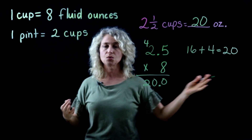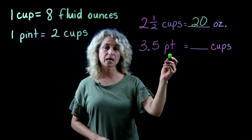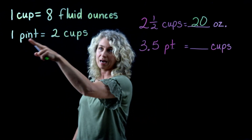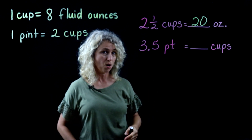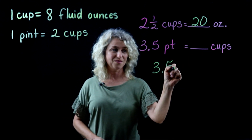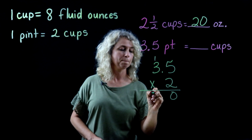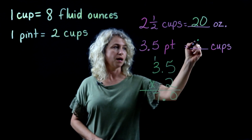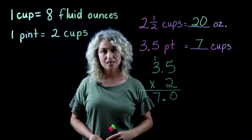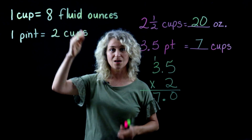This last example is 3.5 pints to cups. The conversion is pints to cups — there are two cups in every pint. Since we're going from larger to smaller, multiply 3.5 times 2. Don't forget your decimal movement, and 3.5 pints equals 7 cups. With these measurement conversions, remember: when moving from larger to smaller, always multiply.